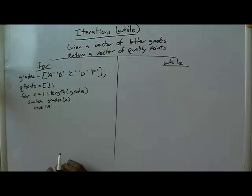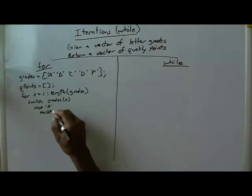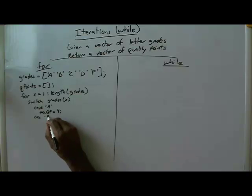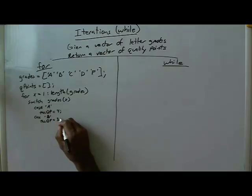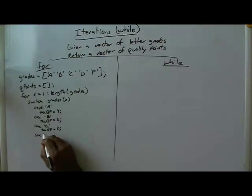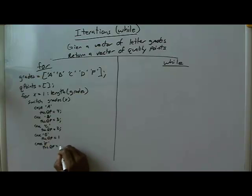There are a couple of ways, as we talked about in class, of doing this. I'm going to do it this way. Case A: this QP equals 4. Case B: this QP equals 3. Case C: this QP equals 2. Case D: this QP equals 1. And case F: this QP equals 0.